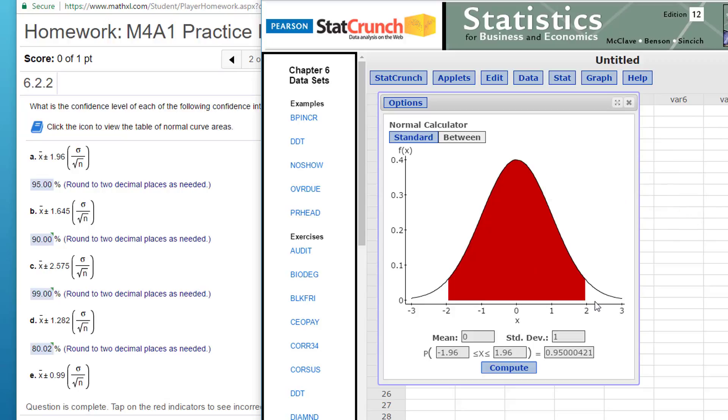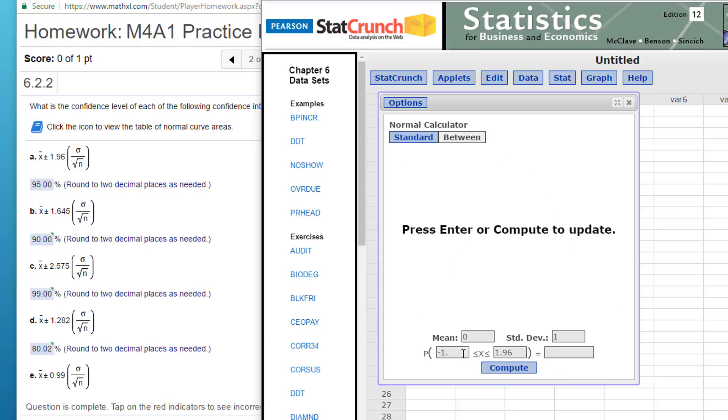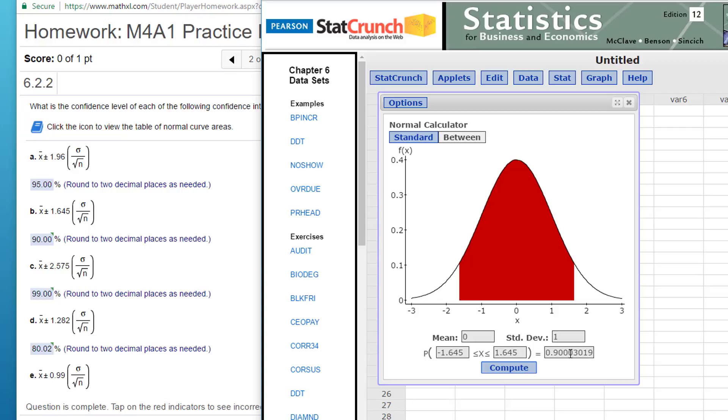Alpha is split in two for confidence interval, since we've got plus and minus. So that's 95% for the first one. The second one is 1.645 minus 1.645 plus. Click on compute. That's a 90% confidence interval.